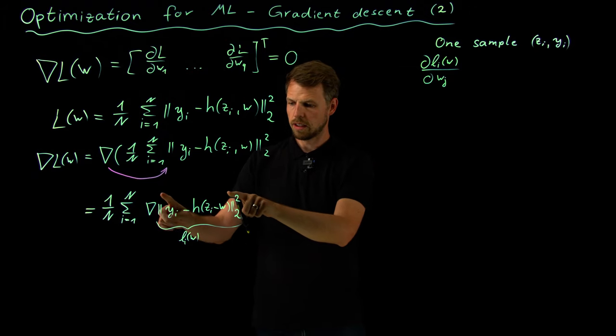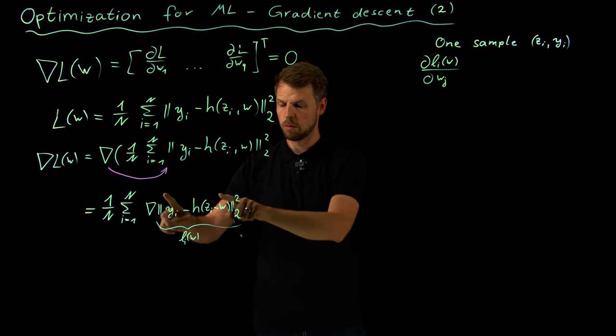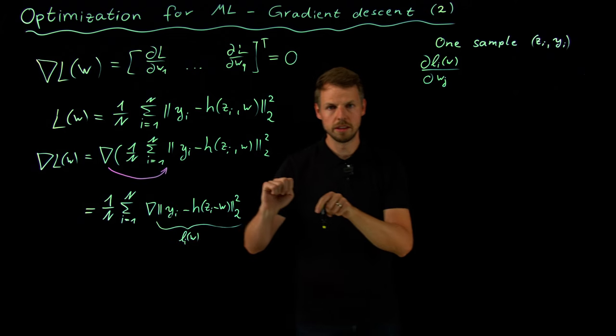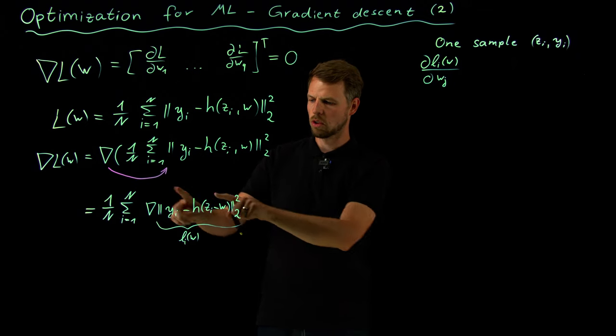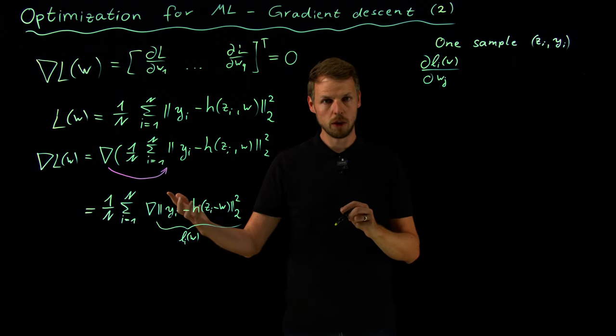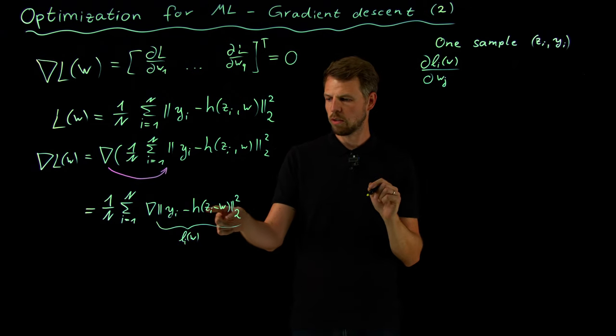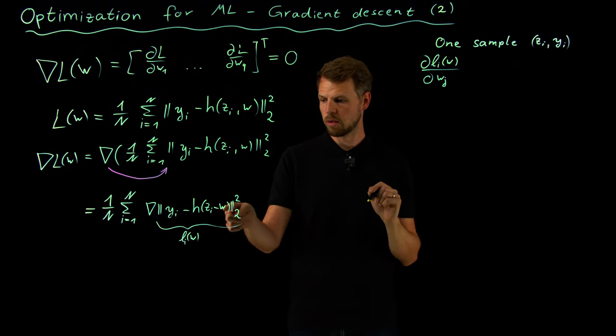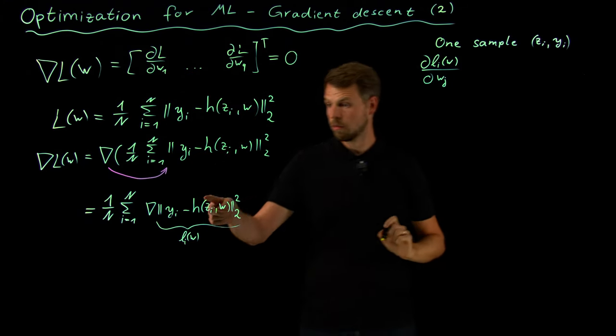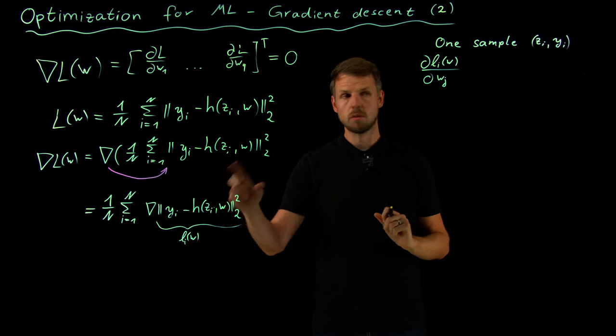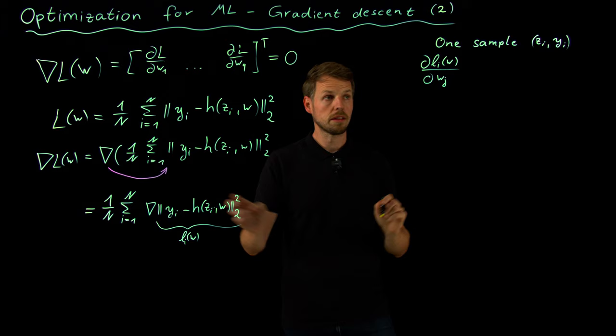I can interchange this for any j, but this gives me a particularly simple expression. This is basically a situation where y is one-dimensional. I could replace this norm by a bracket. Taking the derivative with respect to a particular w, taking the derivative requires us to take the chain rule multiple times.